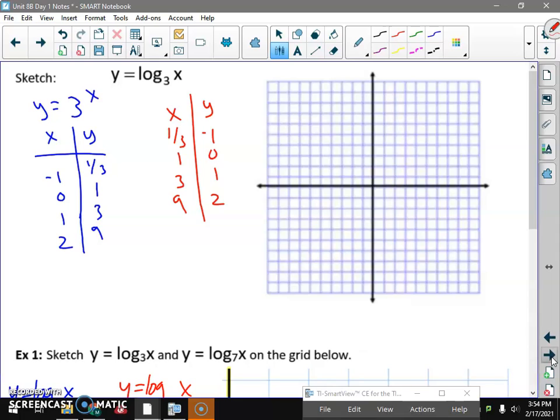So when x is 1/3, y is negative 1. When x is 1, y is 0. When x is 3, y is 1. When x is 9, y is 2. It's not a radical graph. It goes forever. And I'd have to go out to 27 just to get up to 3. And that's a vertical asymptote, the y-axis. There's an arrow there. It goes on forever.